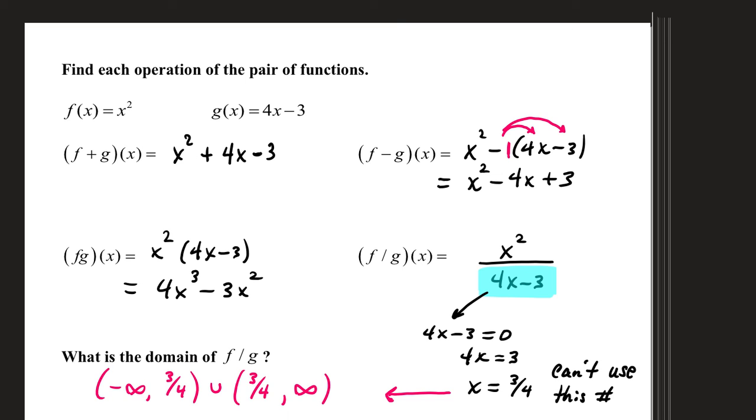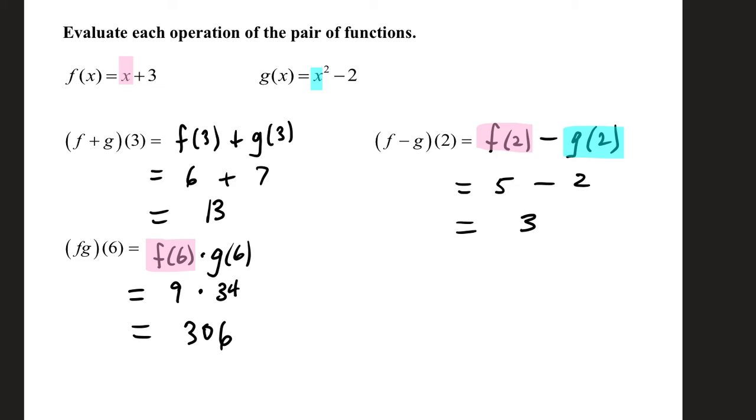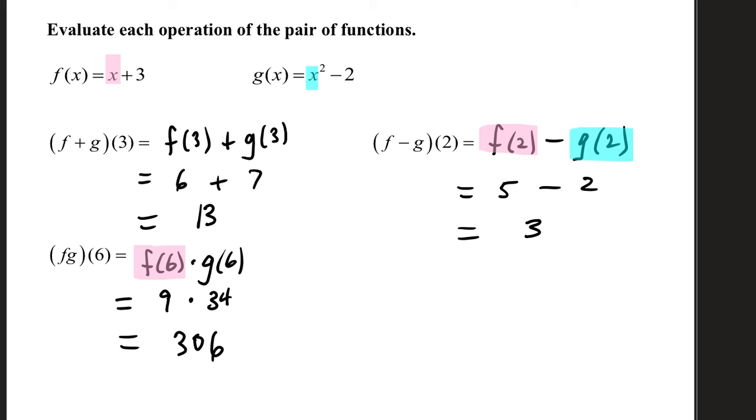And then finally on this example, evaluate each operation. Instead of using x's, we're going to actually insert numbers. f plus g of 3 can be calculated using the values of f of 3 plus g of 3. f of 3 is 3 plus 3, which is 6. g of 3 is 3 squared minus 2, which is 7.